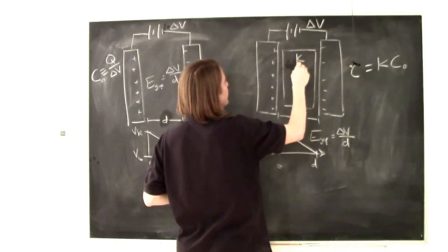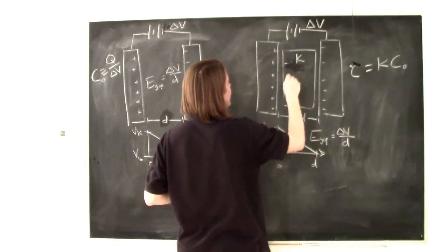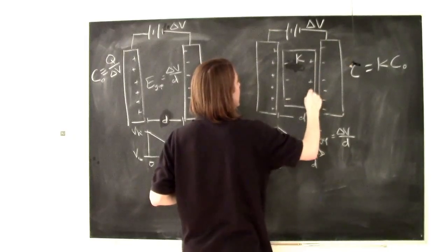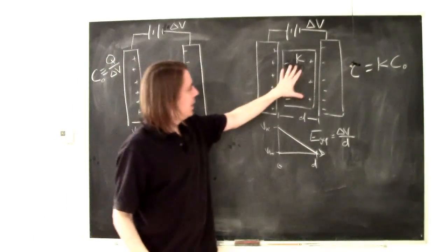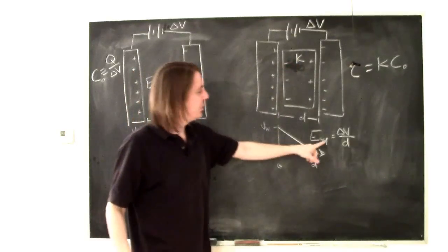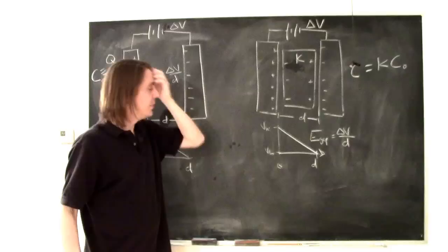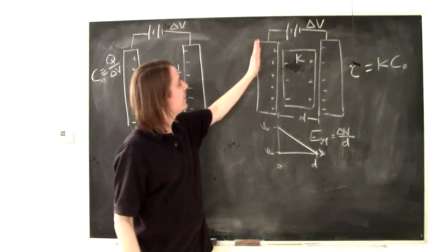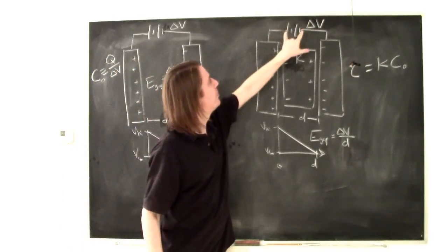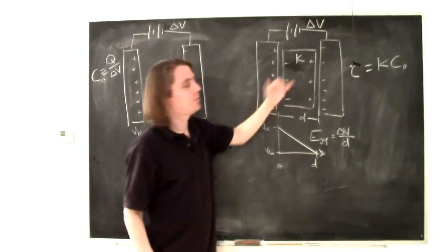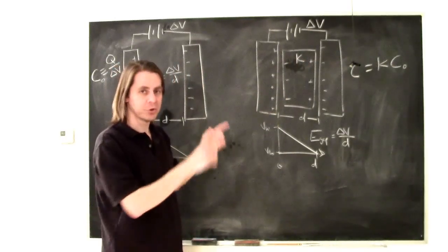And, we know that when this dielectric experiences that field, it will become polarized to oppose that field. So, it will build up a few charges on its surface. Maybe a few negatives on this side, and a few positives on that side. Normally, we would think of that as reducing the field, but we know it can't. It has to be delta V over D. So, what's happening is that these surface charges can change. This battery is going to hold these at a constant potential, no matter what it has to do. And, it can give more charge, if necessary.